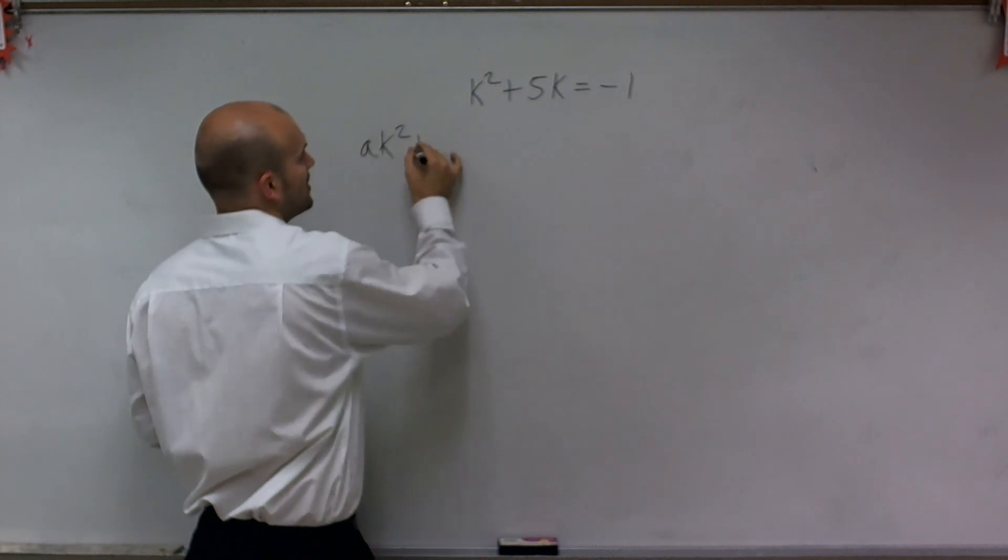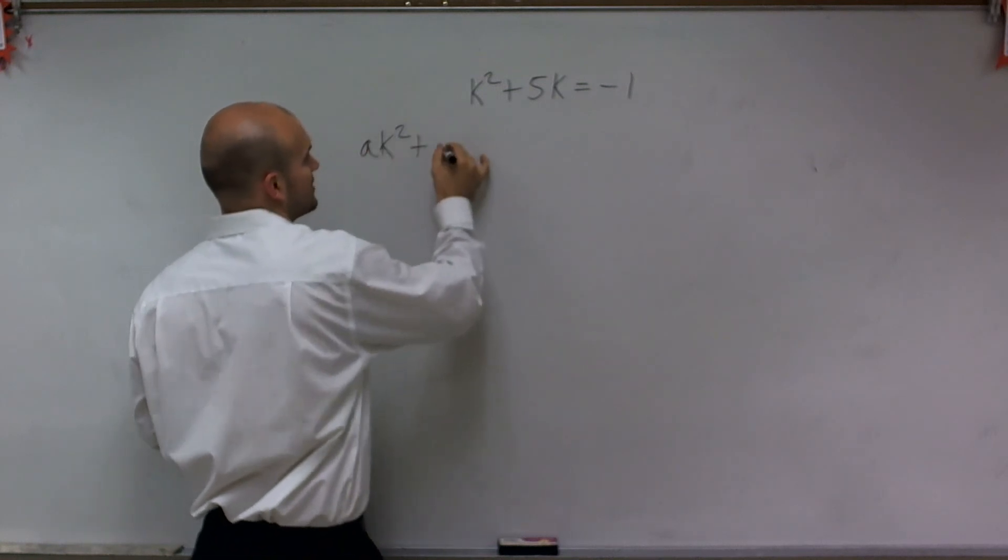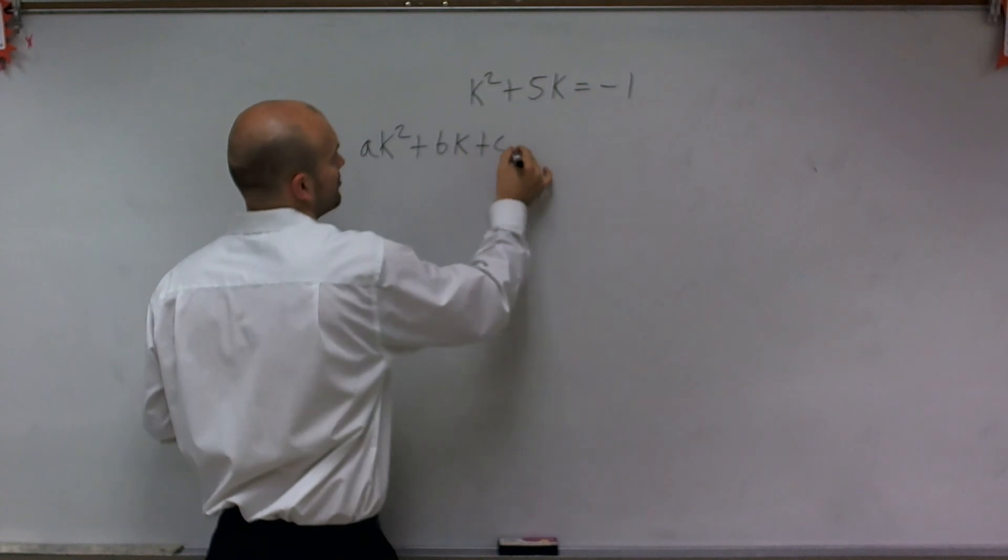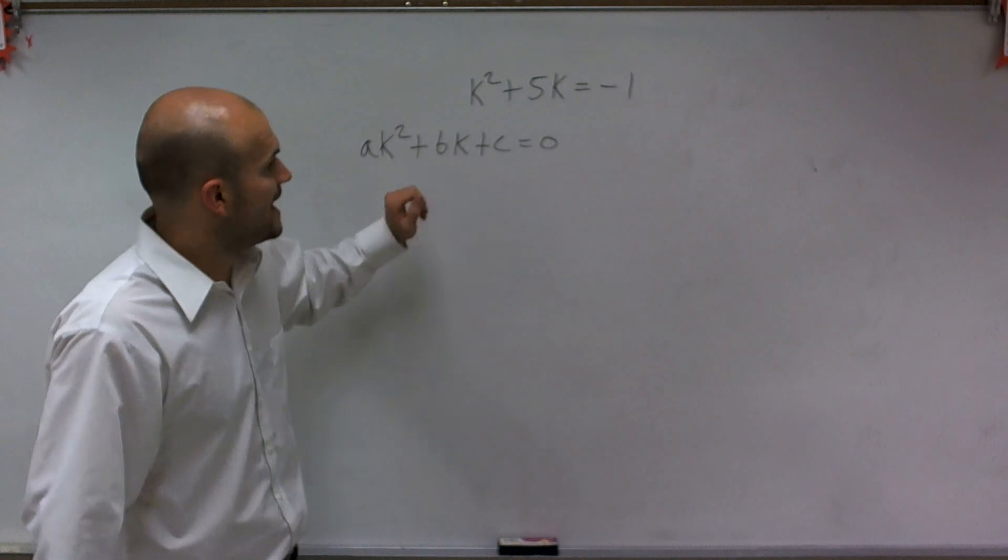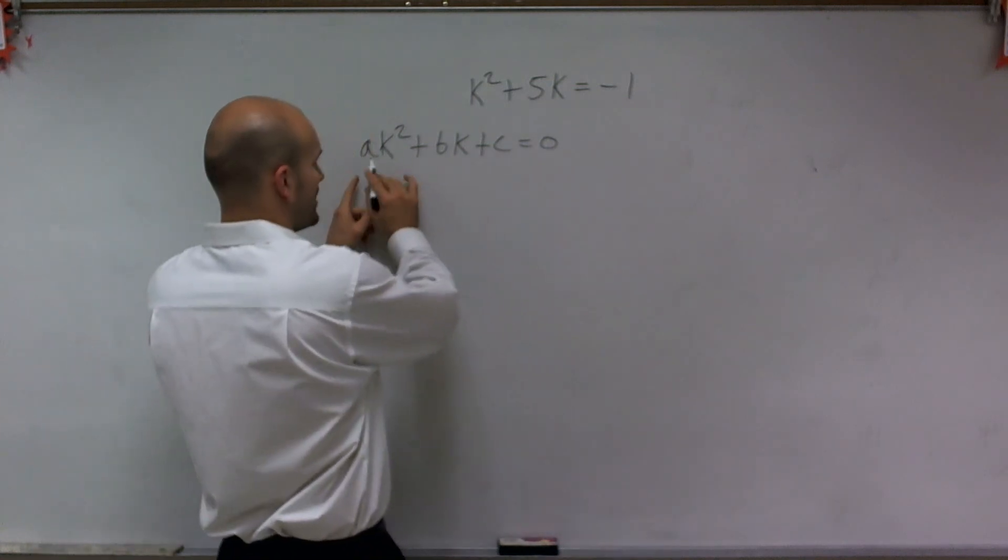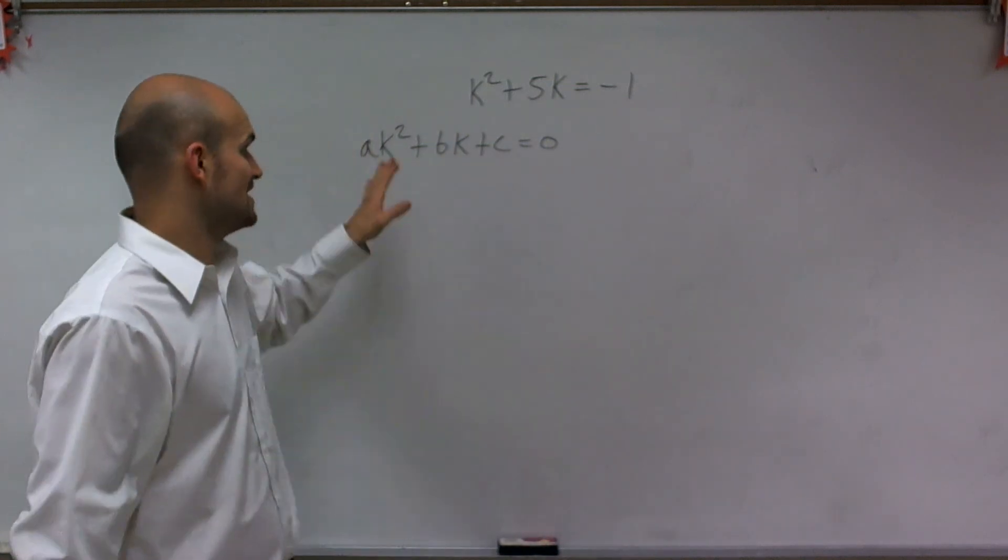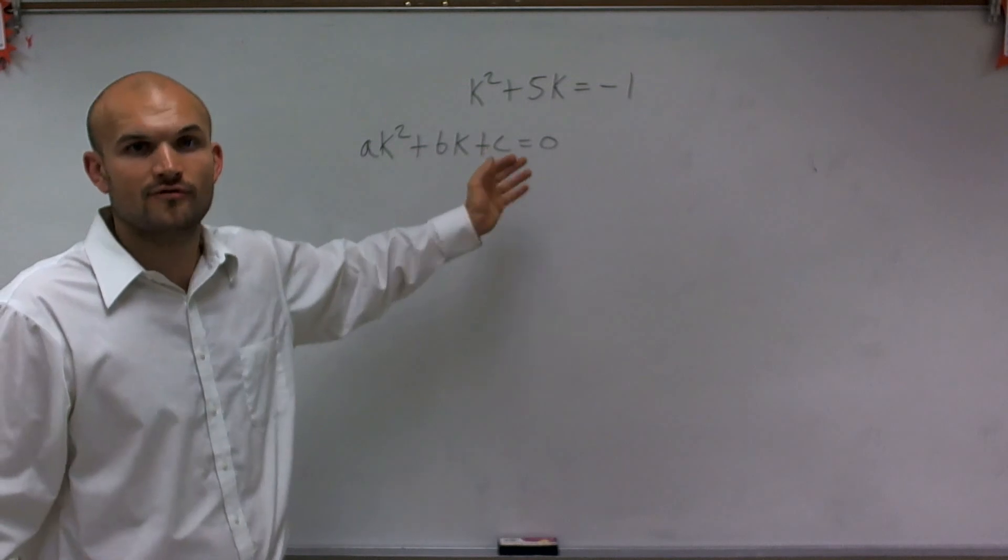What I mean by that, it's in the form of ak squared plus bk plus c, and we can set it equal to 0, where a, b, and c are real numbers, and k is going to be your variable.